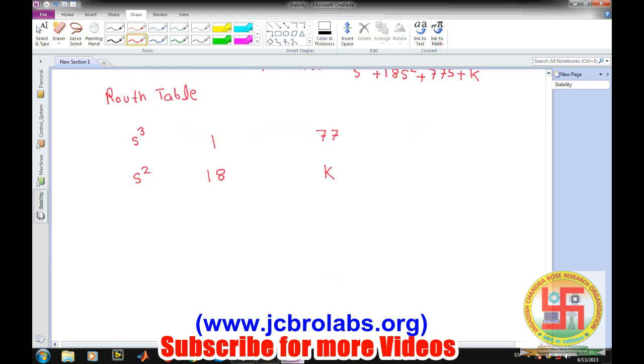Now next row will become s to the power 1, so it will be 18 times 77 minus K divided by 18, which comes out to be 1386 minus K divided by 18, and the next column item is 0. Next power is s to the power 0, so this term multiplied by this minus 18 times 0 divided by this will obviously become K only.